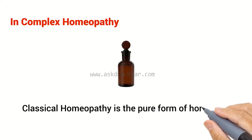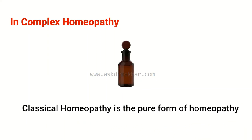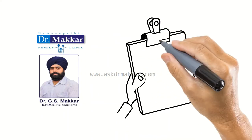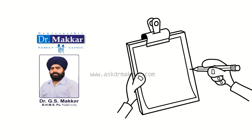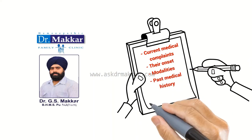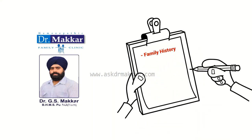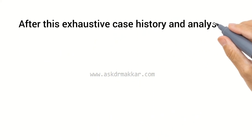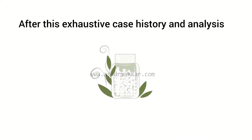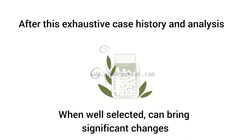Classical homeopathy is the pure form and offers deep and lasting cures. When you consult a classical homeopath for autism treatment, he will note the full case history of your child — including current medical complaints, their onset, modalities, past medical history, mother's history during pregnancy, family history, exploration of stress points or causes for current illness, and a detailed assessment of your child's mental and emotional makeup. After this exhaustive case history and analysis, the homeopath identifies a medicine that covers your child's ASD symptoms the best. Such a remedy, when well selected, can bring significant changes in many difficult and inveterate cases.